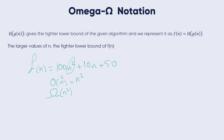Omega of n² because it is the tighter lower bound. The Omega notation can be defined as: Ω(g(n)) = {f(n) : there exist positive constants c and n₀ such that 0 ≤ c·g(n) ≤ f(n) for all n ≥ n₀}.